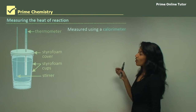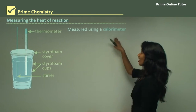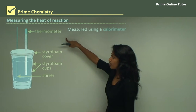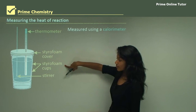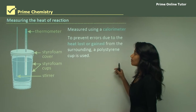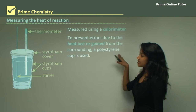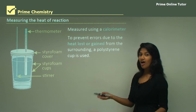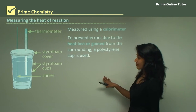Measuring the heat of reaction: to measure the heat of reaction, you'll be using a calorimeter — something you would set up at school. You would have a thermometer, a styrofoam cover, a styrofoam cup, and also a stirrer. The reason you use styrofoam is to prevent errors due to heat loss, as it is an insulator that prevents heat from dissipating into the environment, unlike a beaker where heat is lost readily.